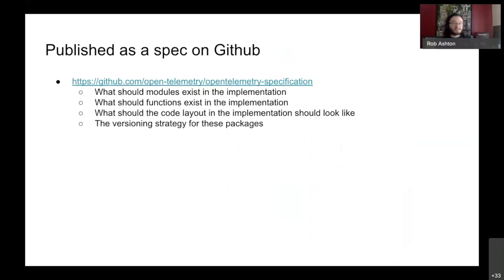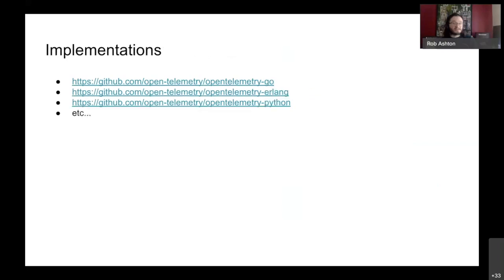The specification is on GitHub and effectively lists what modules you should expect to see in any implementation, what functions should exist, and what the code layout should be. No matter what language you work in, the use of OpenTelemetry should largely look the same across those languages and platforms, because it has been written as such. Obviously there's a little difference in interpretation between functional and OOP languages, but by and large this works because people from both camps attend those meetings. You can find all the language implementations on GitHub - Go, Erlang, Python, and so forth.